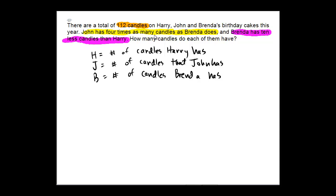In orange, we know that there's a total of 112 candles. Harry has h, John has j, Brenda has b. So if we add all of these together, h plus j plus b equals 112. Second sentence: John has four times as many candles as Brenda does. So j equals 4 times b — we're taking Brenda's number, multiplying it by four, and that becomes John's number of candles.